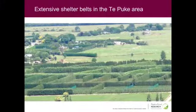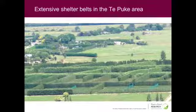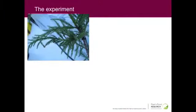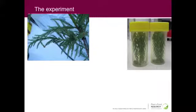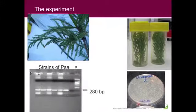We also looked at shelter belts. New Zealand is a relatively windy country and uses a lot of shelter belts to protect crops. The question was: could the shelter belt harbor PSA, and could PSA multiply on that shelter belt and lead to more disease in the orchards? We worked with Cryptomeria japonica, the tree most often used for shelter belts. We inoculated plants with PSA, and on a regular basis took one gram of plant tissue, isolated the bacteria, and confirmed it was PSA by PCR.